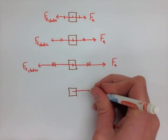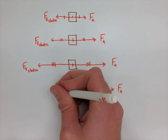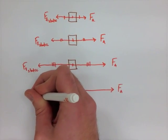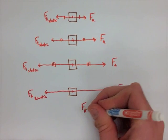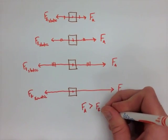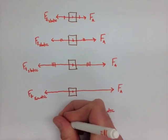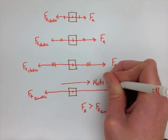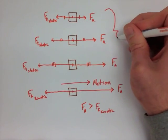And then in the fourth diagram, the force applied is finally greater than the force of static friction. So now we're dealing with kinetic friction, which if you notice is far less. So the force applied is greater than the force of friction, and we actually get motion and acceleration in the right direction.